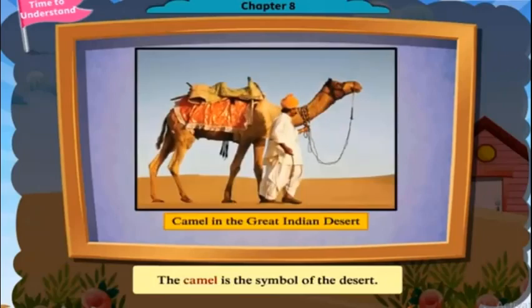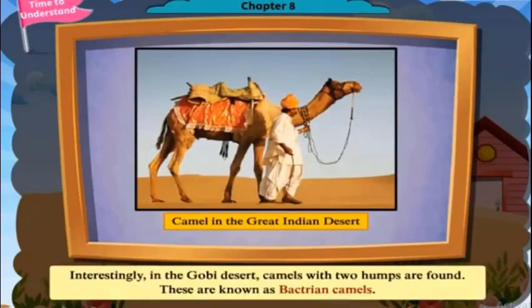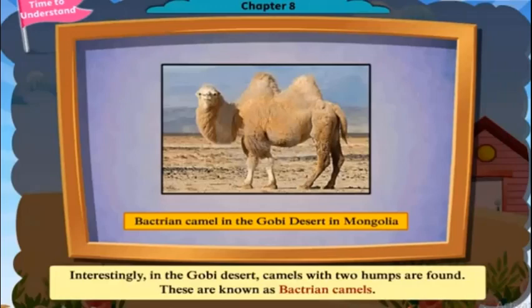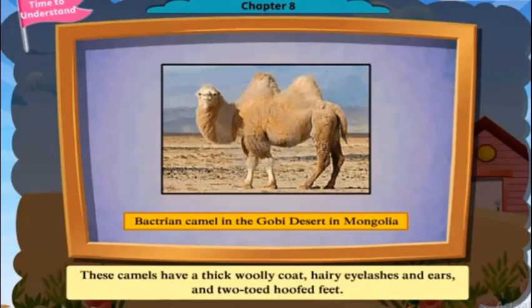The camel is the symbol of the desert. Interestingly, in the Gobi Desert, camels with two humps are found. These are known as Bactrian camels. These camels have a thick woolly coat, hairy eyelashes and ears, and two-toed hoofed feet.